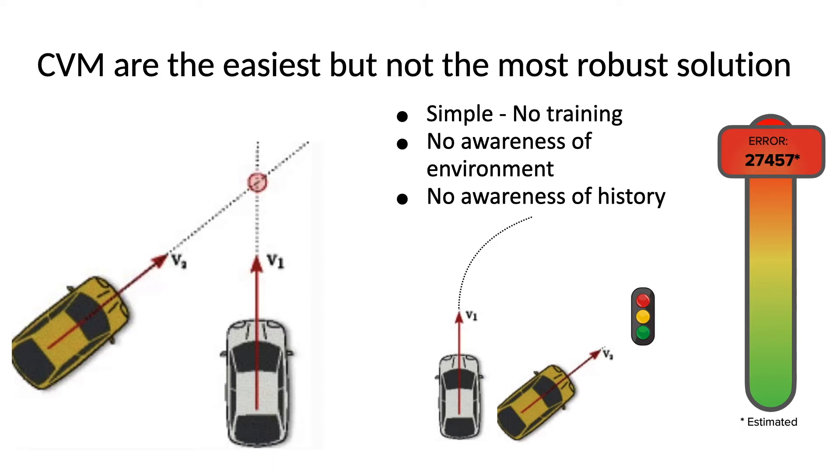However, as you can imagine, there's many downsides to this. The first one is the lack of awareness of its environment. So, if you imagine a more urban situation, there's a lot more factors that go into whether a car will maintain its speed, slow down, or speed up, including traffic lights, other vehicles around it, and obstacles like pedestrians or cyclists. And this model does not take any of that into account.